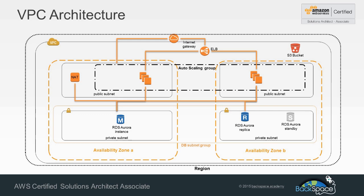We're going to start off by creating a VPC in a single availability zone with private and public subnets, then expand that to a second availability zone and create a DB subnet group. Within that private subnet we will create an RDS Aurora cluster across multi-AZ. We're going to have an RDS Aurora standby instance and also create an RDS Aurora replica to take the read load off our RDS master database.